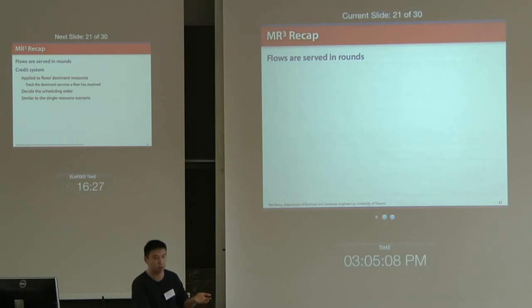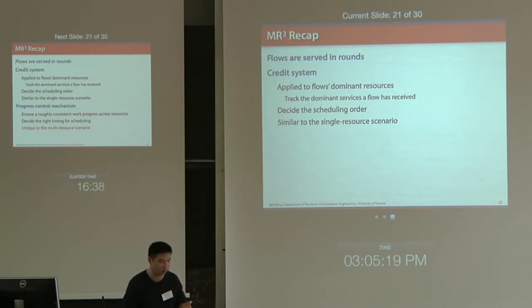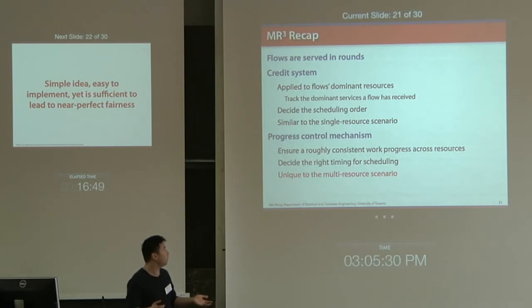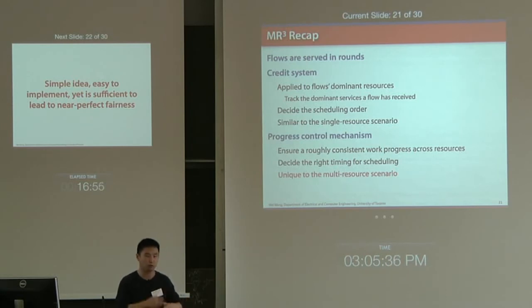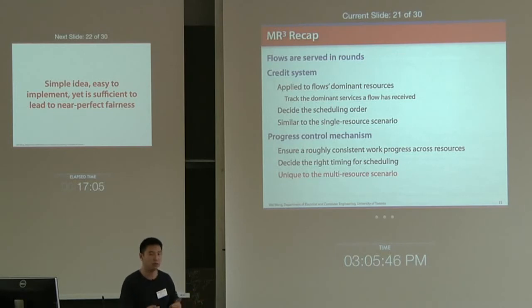To summarize: in our design, flows are served in rounds. A credit system applied to flows' dominant resources tracks dominant services received and determines scheduling order, similar to the single-resource scenario. Beyond that, we also need the progress control mechanism to ensure a relatively consistent work progress across resources, which determines the right timing of scheduling. We believe this progress control is a unique component required when you have multiple resources.